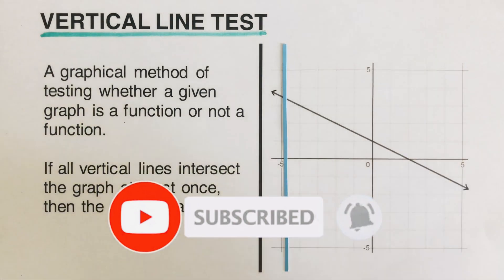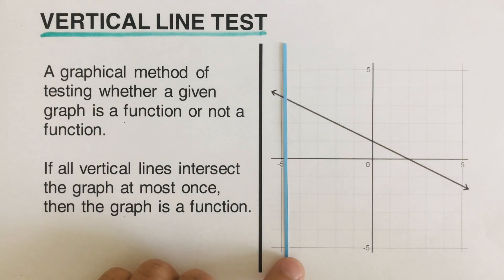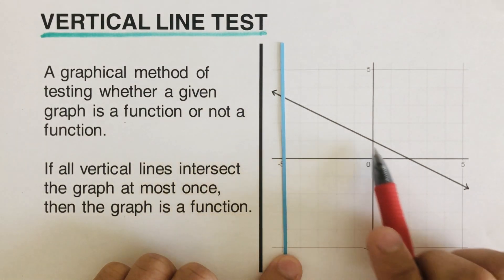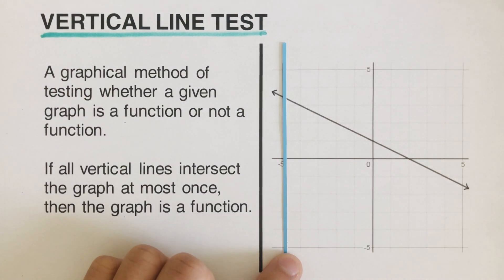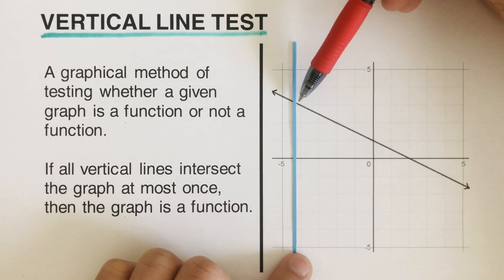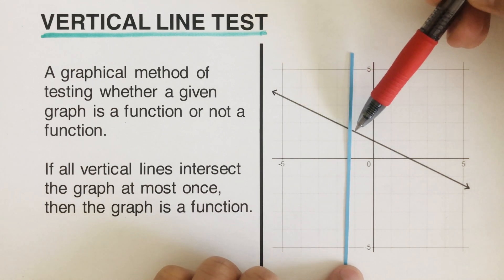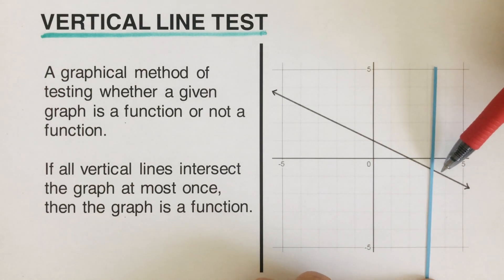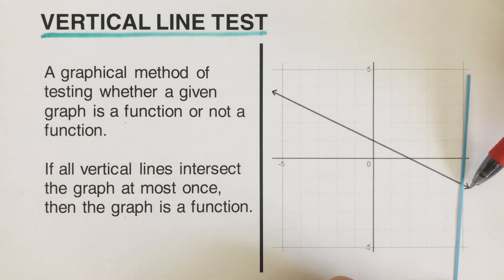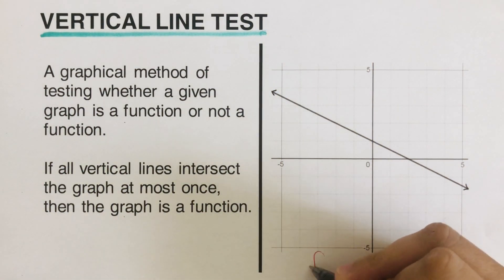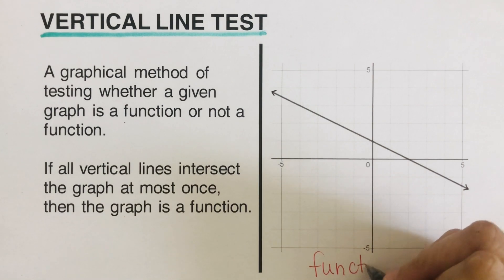Here's the first example. If I were to pass this vertical line through this graph, let's see if it's touching two or more points. I move this vertical line across from left to right — it's touching only at one point. So this is the intersection between the line and the graph. Since it's touching only at one point, we can say that this graph is a function.